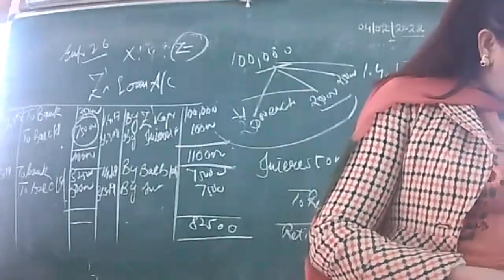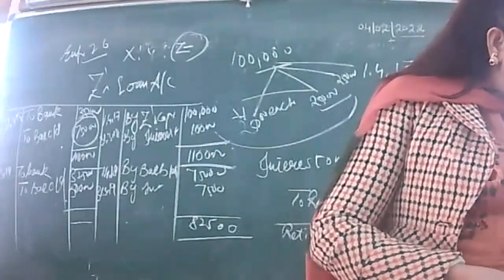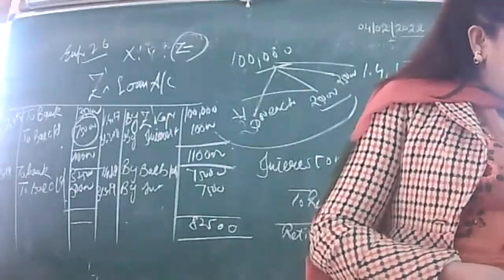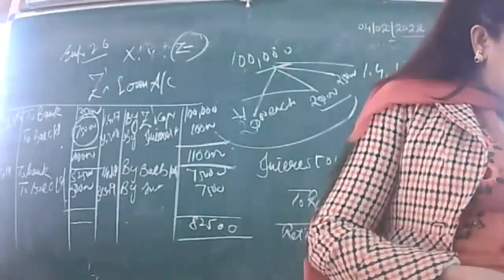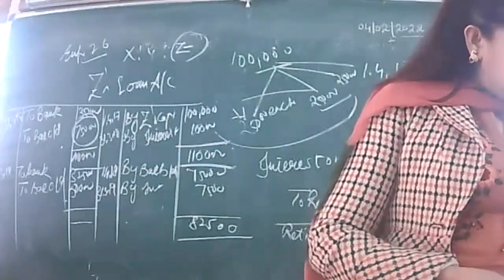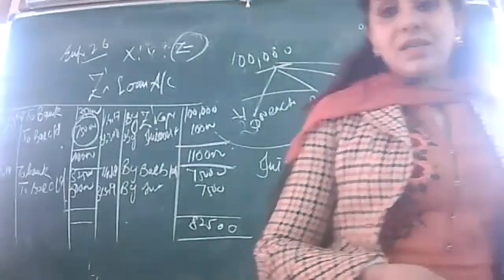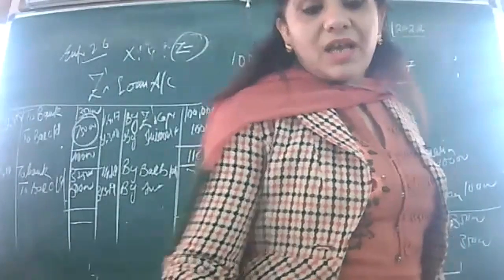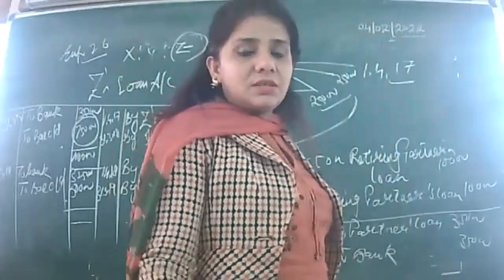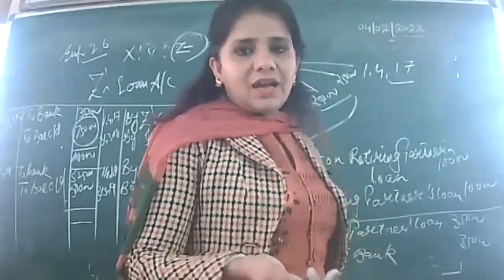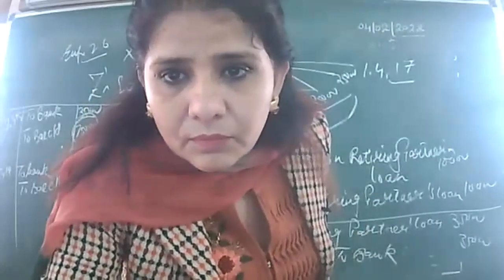Illustrations 27, 28, 29, and 30 will be discussed in the last period. Loan topic will be finished then. Adjustment of capital is not in the syllabus — confirmed from the sample paper as well, so it has been deleted. We will skip adjustment of capital. After explaining the remaining loan illustrations, we will start with the death of a partner topic.